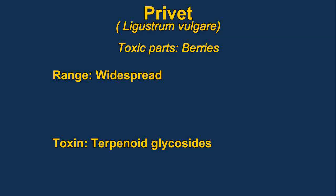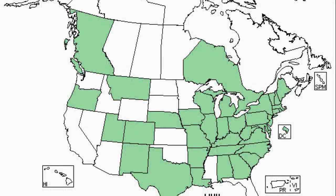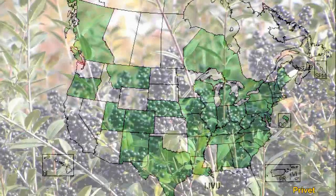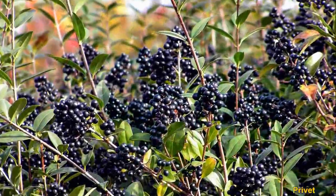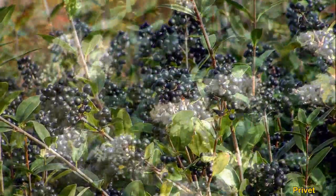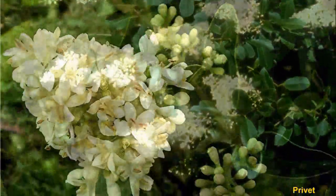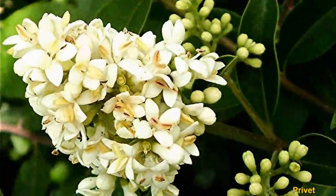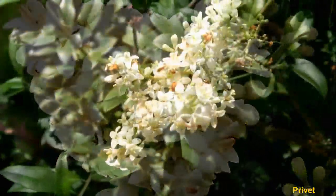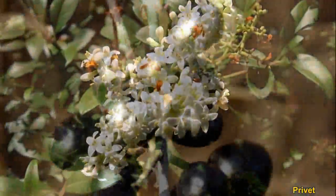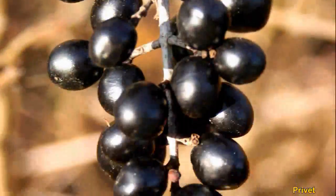Privet, also known as common privet or European privet, is a shrub growing up to 3 meters tall. The berries are poisonous to humans. The main toxins are terpenoid glycosides.